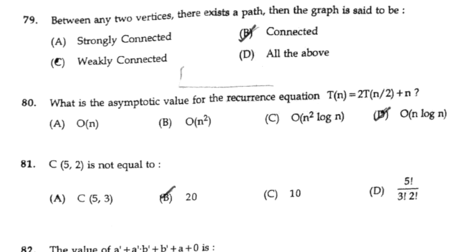What is the asymptotic value of the recurrence equation T(n) = 2T(n/2) + n? The answer is option D: O(n log n).